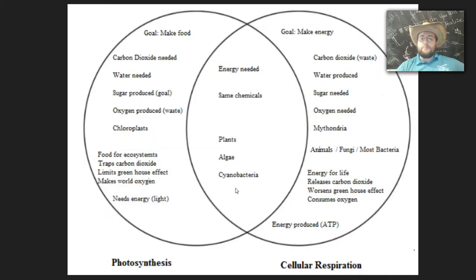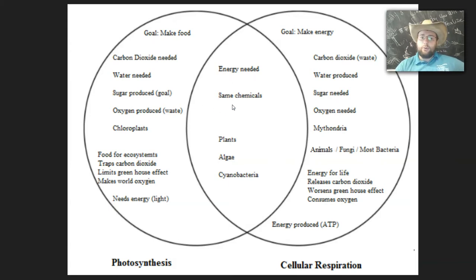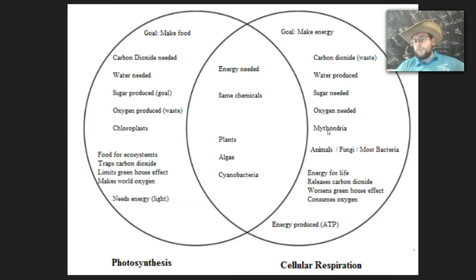Now let's go ahead and compare them. Notice that photosynthesis makes food for life, while the goal for cellular respiration is to make energy for life. Carbon dioxide and water, which are needed for photosynthesis, are actually produced during cellular respiration. And the sugar produced together with oxygen during photosynthesis is needed for cellular respiration. In a way, both processes involve energy and the same chemicals. Notice also that chloroplasts are the ones doing photosynthesis, while mitochondria are the ones doing cellular respiration.